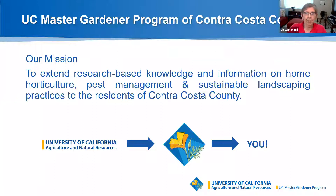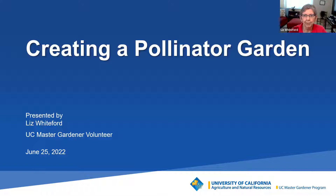The mission of the UC Master Gardener program is to extend research-based knowledge and information on home horticulture, pest management, and sustainable landscaping practices to the residents of Contra Costa County and beyond. We're going to be talking about creating a pollinator garden — first, who the pollinators are, where they are, why they're struggling, and then we'll have a break and go into the steps to create a pollinator garden.